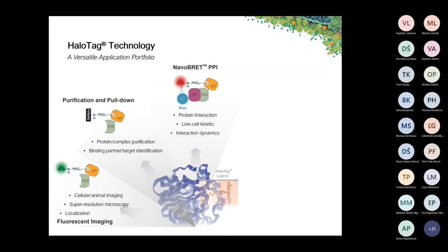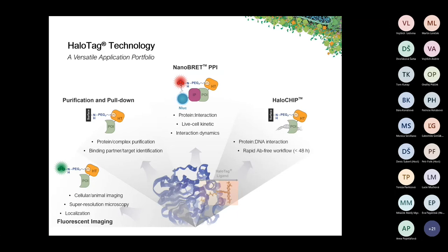Besides studying protein-protein interaction, HaloTag is also useful for studying the interaction of proteins with DNA — this is called HaloChIP, similar to a conventional chromatin immunoprecipitation approach. The major difference is that it's a completely antibody-free workflow, making it rapid — accomplishable in less than 48 hours. The last application is targeted protein degradation. We developed a HaloTag ligand that utilizes a small molecule which recruits the von Hippel-Lindau E3 ligase, allowing you to specifically target HaloTag fusion proteins for proteasomal degradation — a helpful tool for phenotypic studies to elucidate gene function.